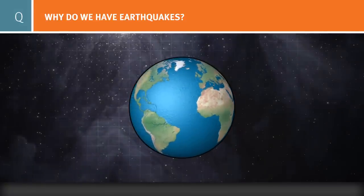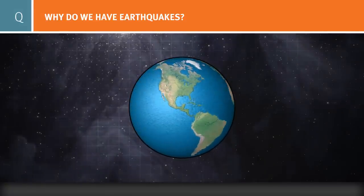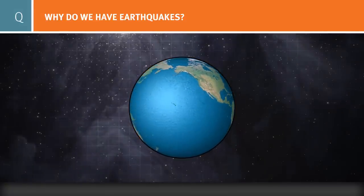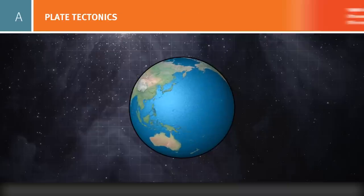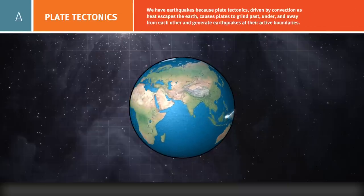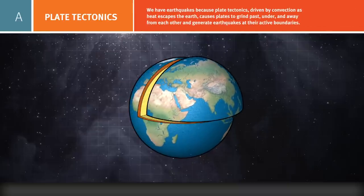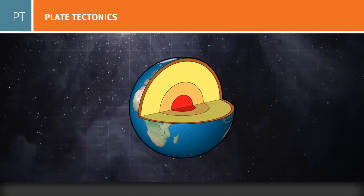To understand why we have earthquakes, we need to step back for a big picture view of the entire Earth as a system. To understand the role of plate tectonics in this system, we can divide the Earth into four main compositional layers: the crust, mantle, outer core, and inner core.